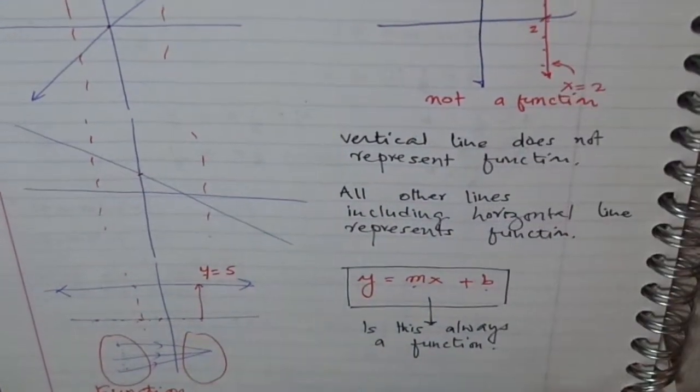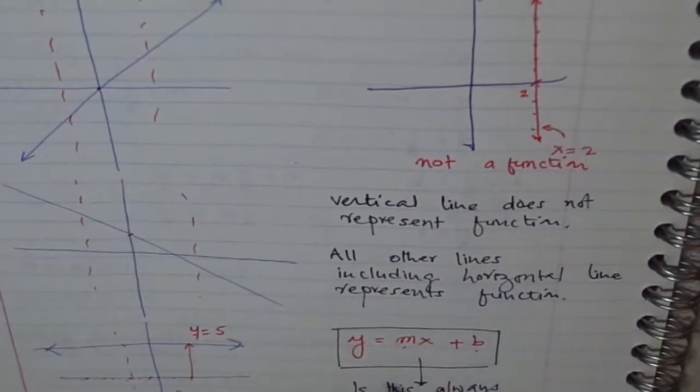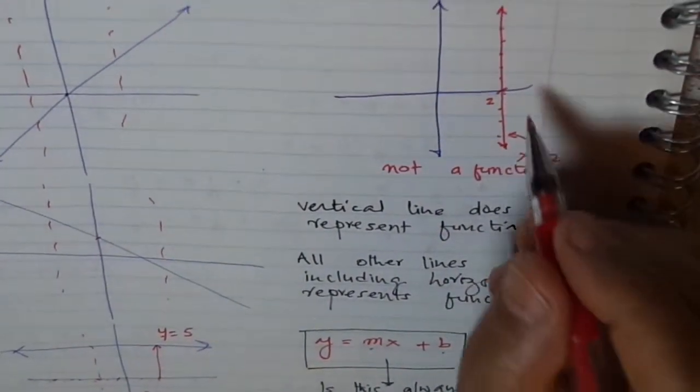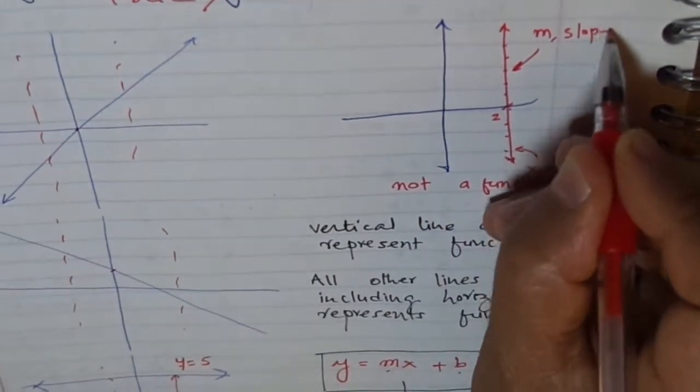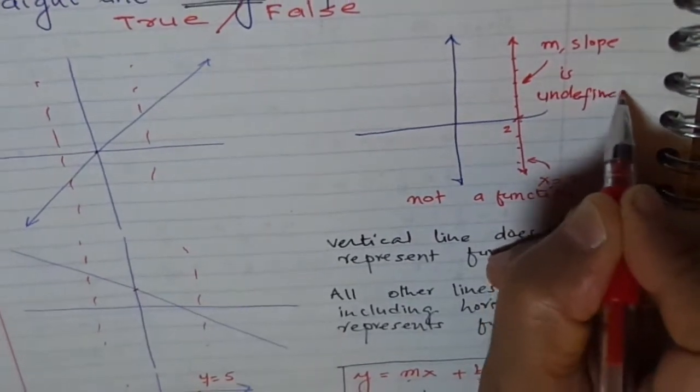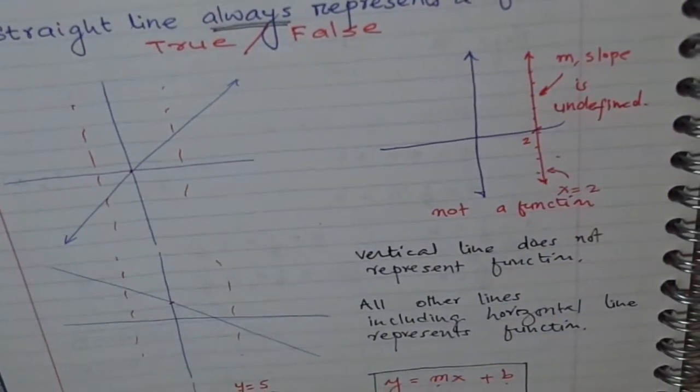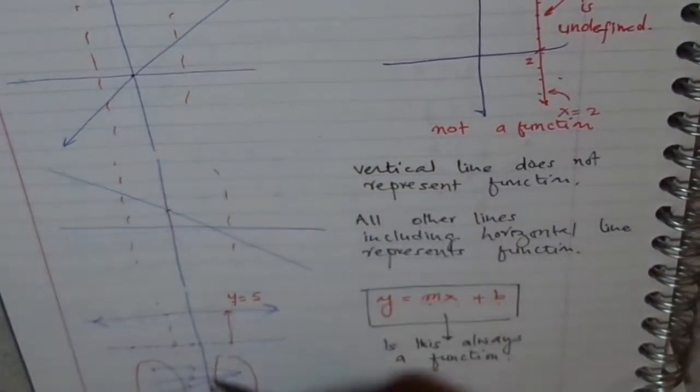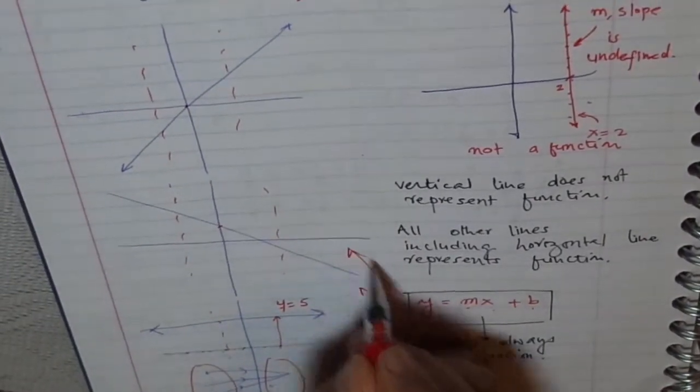How about this line? This line cannot be written as y equals mx plus p. Because here, the slope is undefined. m, that is the slope, is undefined. Therefore, this situation cannot be represented by this particular equation. Only these lines can be represented by this equation.